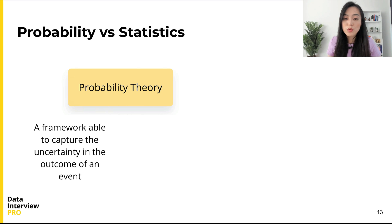To understand the difference between the two, I think it's helpful to start with understanding their relationships with observed data. As I mentioned earlier, probability theory is a mathematical framework able to capture the uncertainty in the outcome of an event we are trying to model.